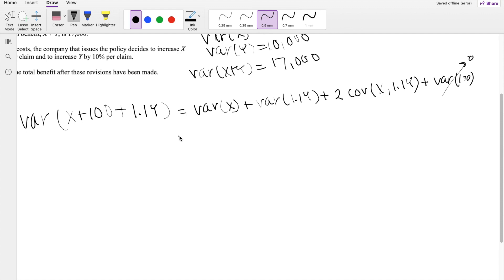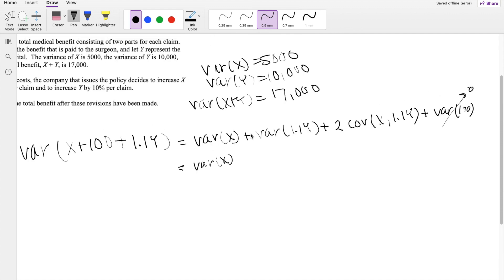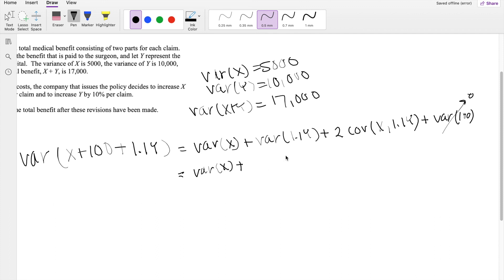going back here, so now we have variance of x, which we know is 5,000. And then we can actually factor this out. But when we factor it out, it becomes 1.1 squared variance of y. Plus, we can also do the same thing here, factor out the 2 times 1.1 here. But because this is in covariance, it doesn't follow the same squared rule, so it would just be 2 times 1.1 covariance of x and y.